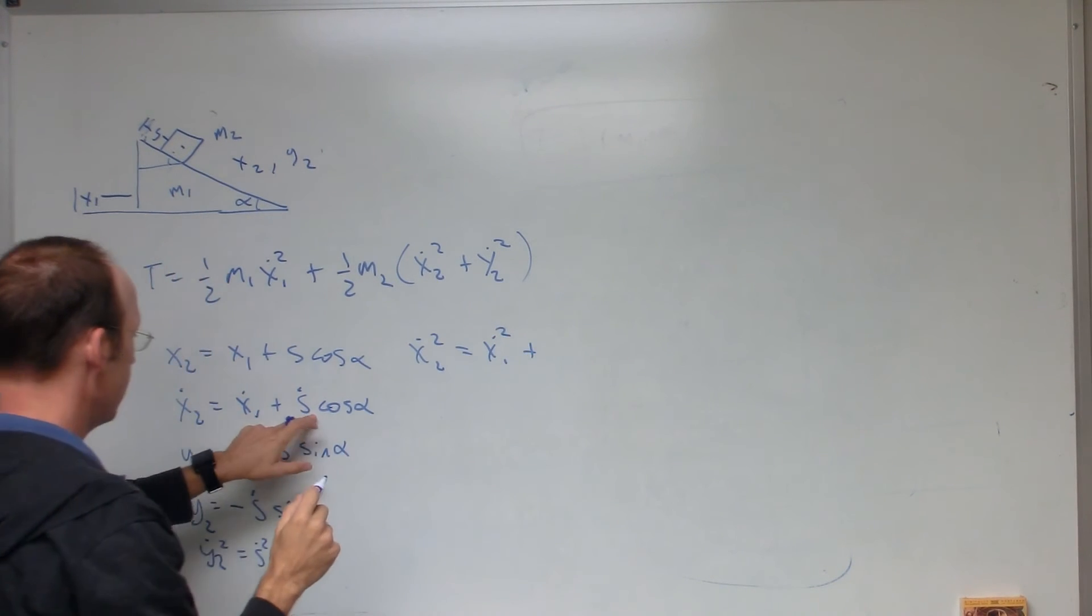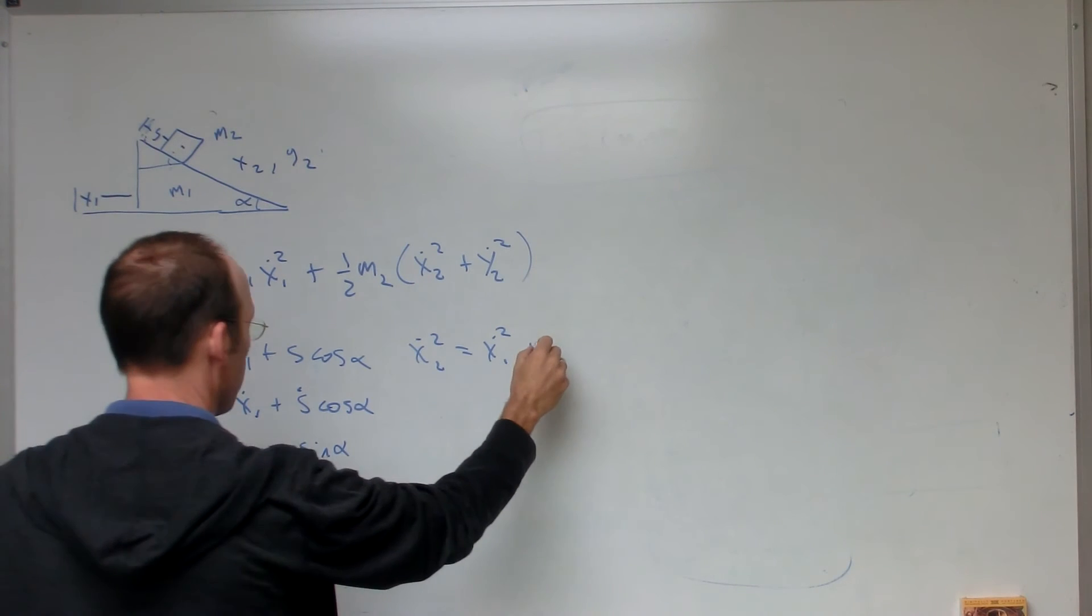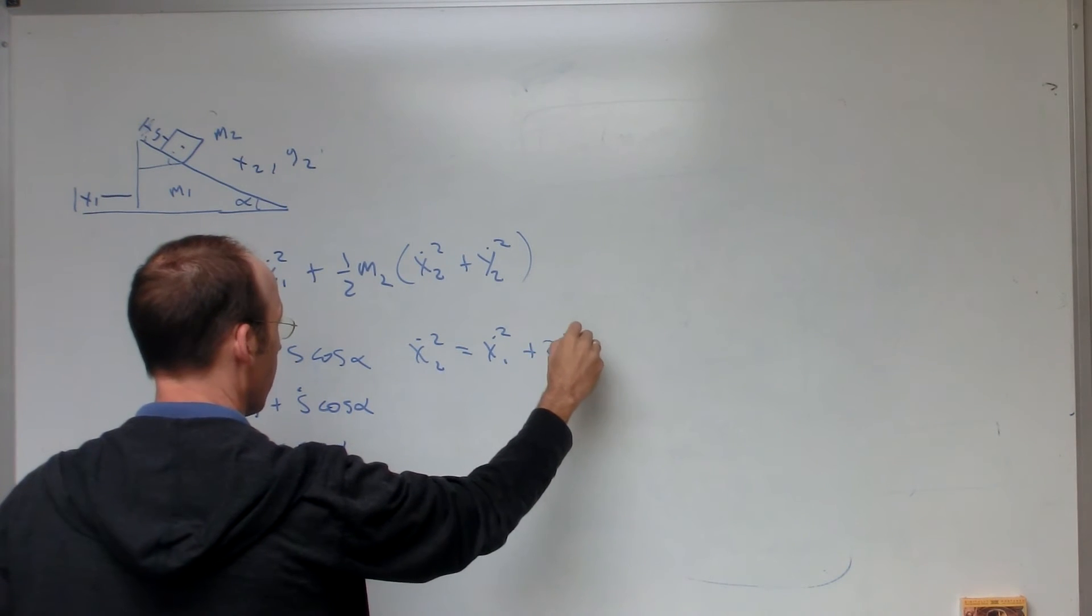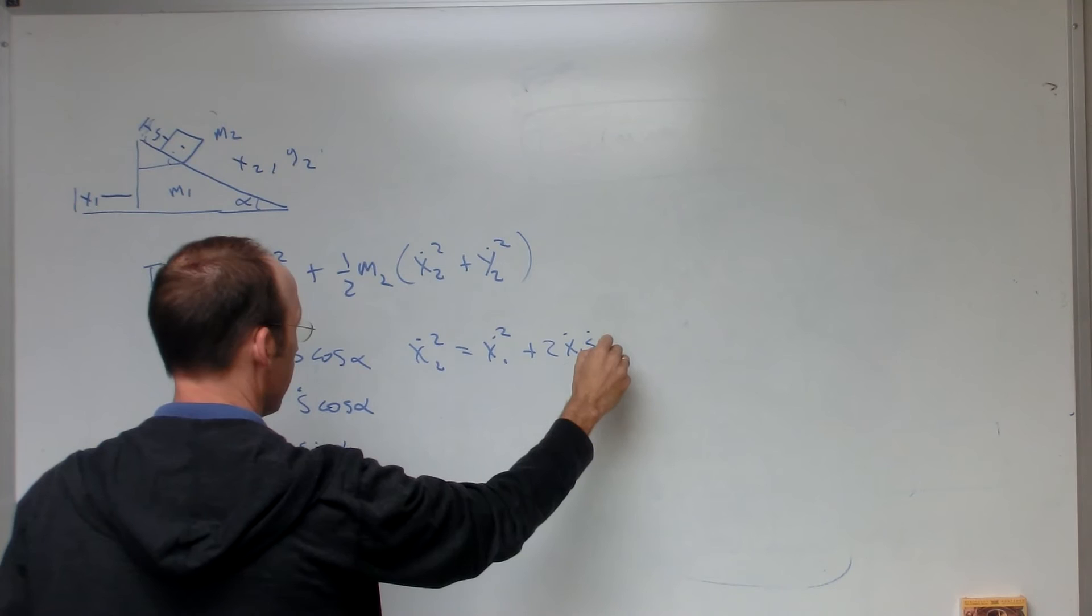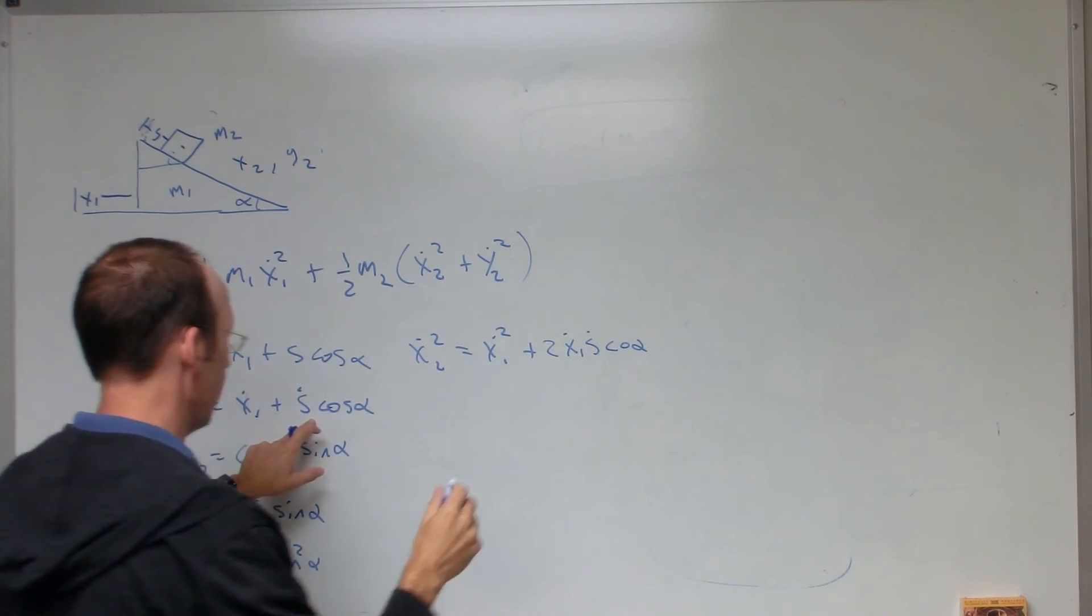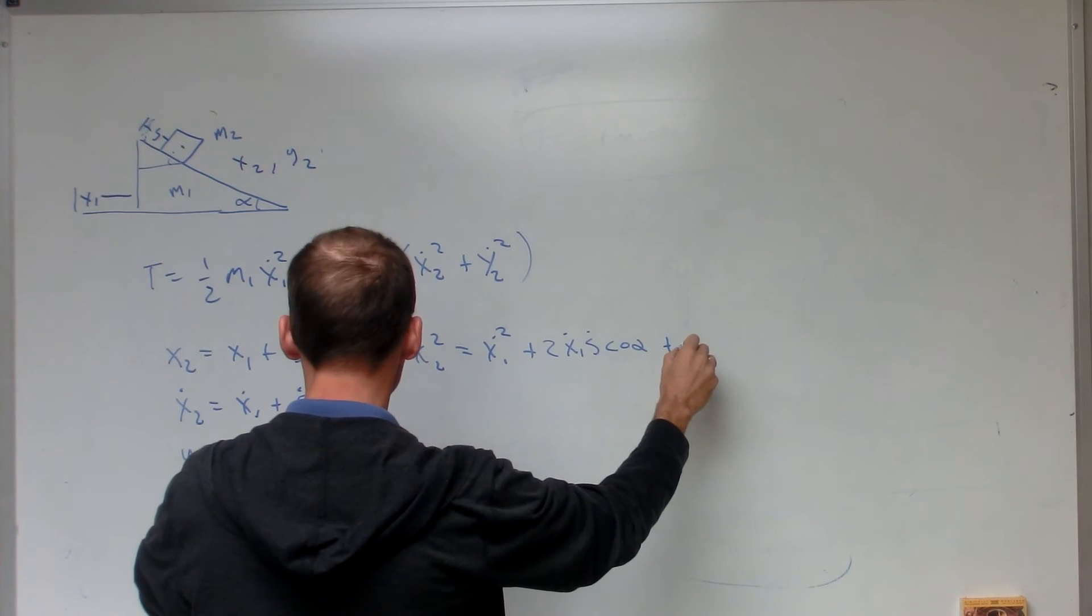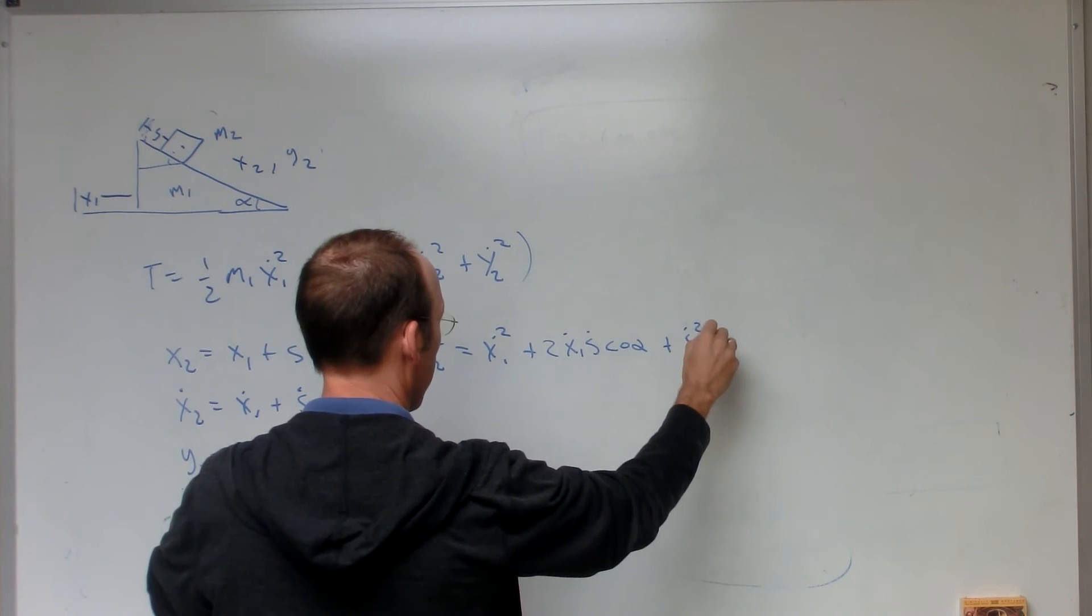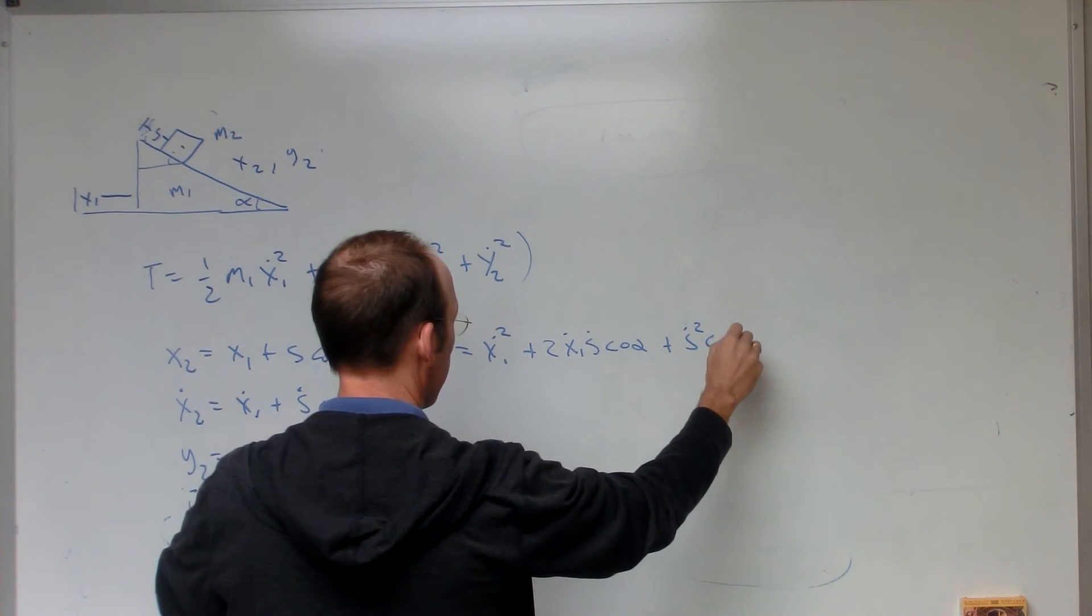plus this times this, plus this times this. So, I get 2 x1 dot, s dot, cosine alpha. And then I get that, plus s dot squared, cosine squared alpha.